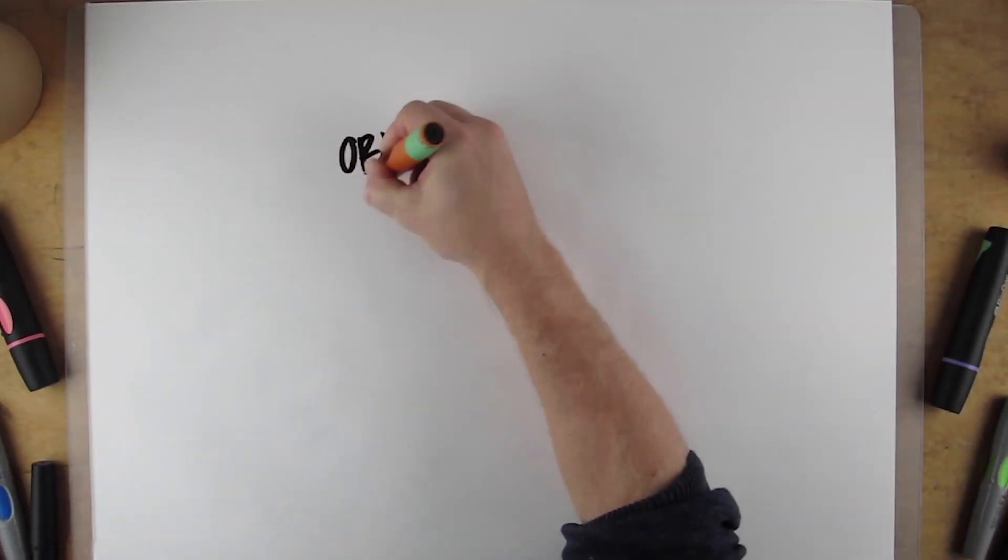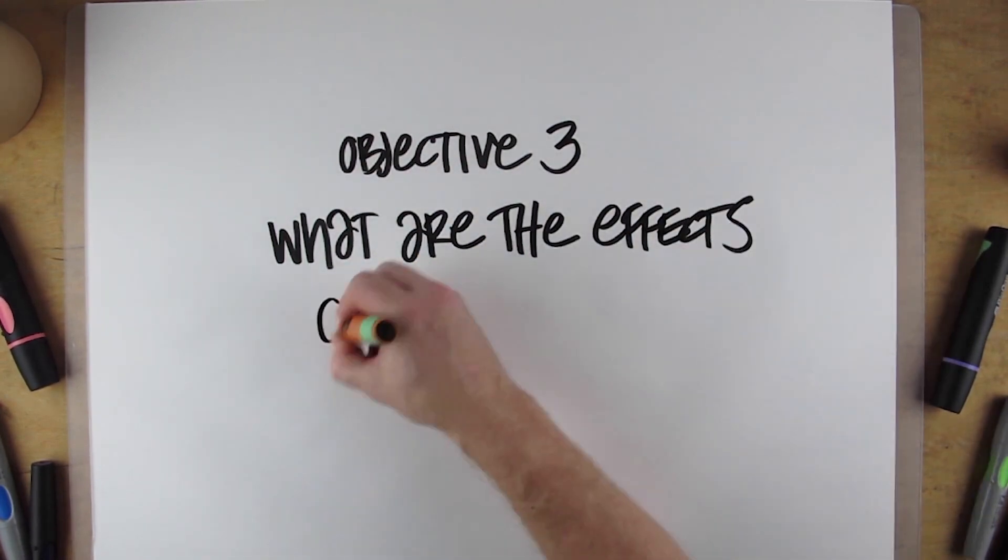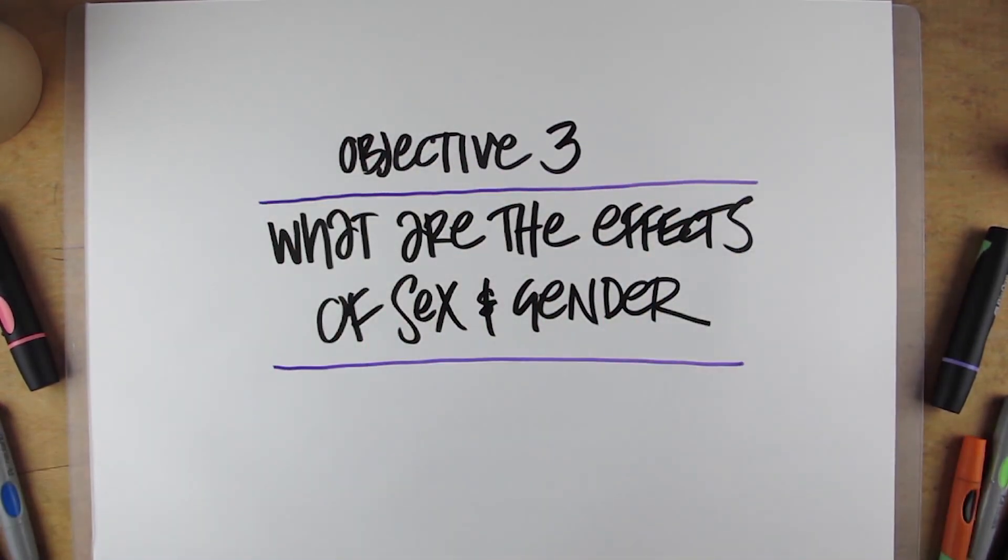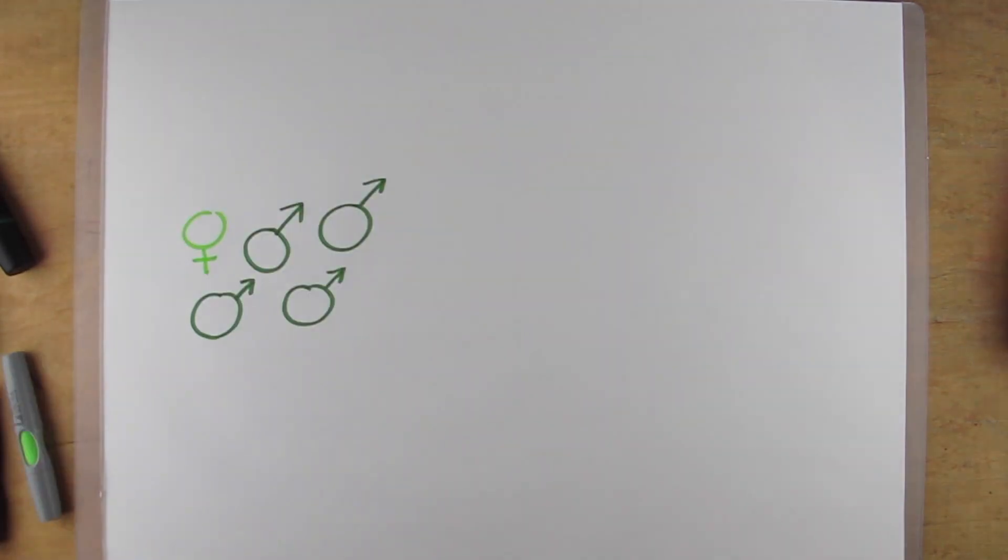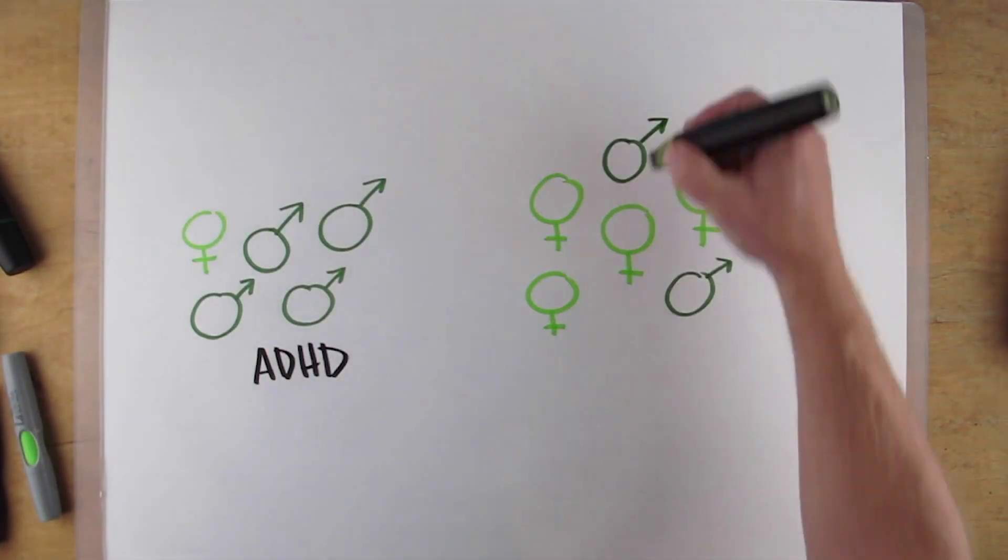Thirdly, we want to see if any of these factors can explain some of the divergences in the distribution of psychopathology by gender. For example, ADHD is predominant in boys and depression is predominant in girls.